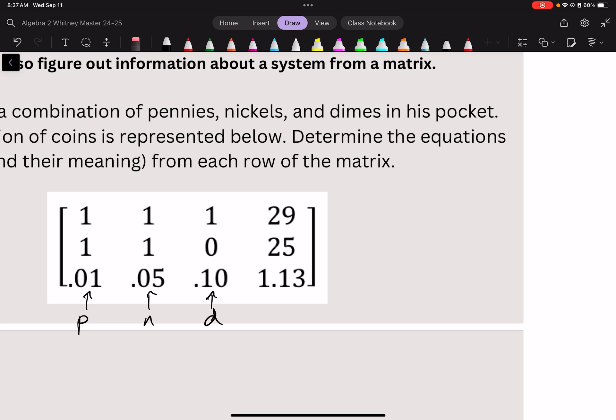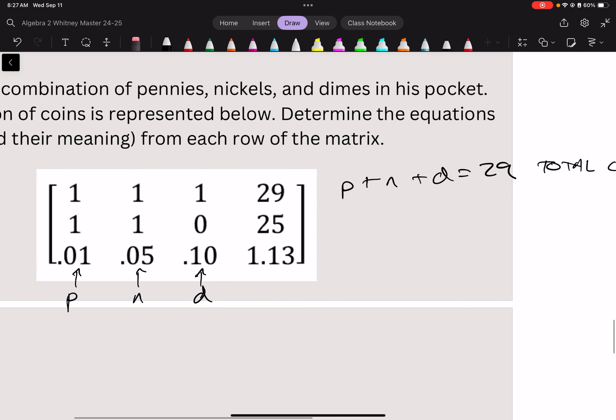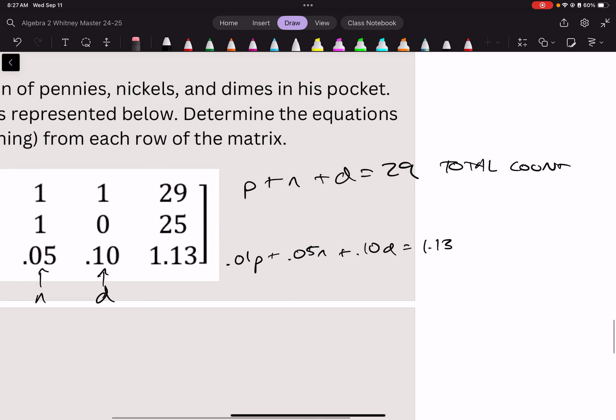So, now we can turn this into equations. The first one says, 1 penny plus 1 nickel plus 1 dime equals 29. That's probably a total count. The last equation says, 0.01 pennies plus 0.05 nickels plus 0.10 dimes equals 1.13. Given that everything is a decimal here and we're dealing with decimals, this is probably going to be a total dollar amount.